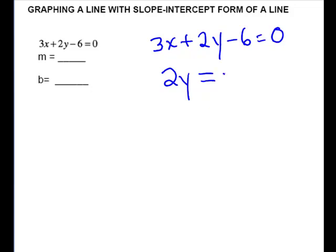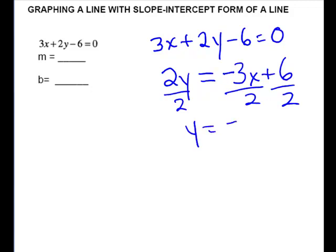To get the 3x over, I'm going to do minus 3x. To get the 6 over, I'm going to do plus 6. And now I just need to divide by 2 all the way across.